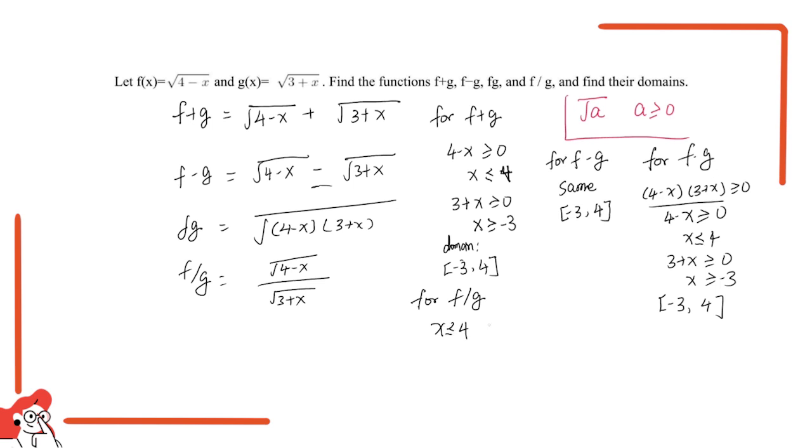x is greater or equal to negative 3, but now we notice that the denominator cannot be 0, so 3 plus x cannot be 0. x cannot be negative 3, so this equal sign cancels out. For f over g, the domain is a little bit different. It's negative 3 to 4.